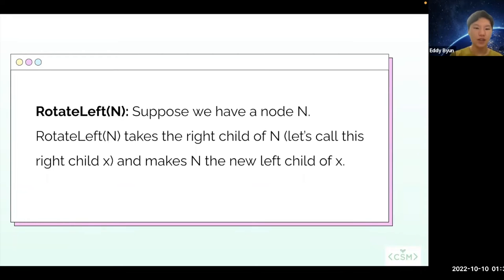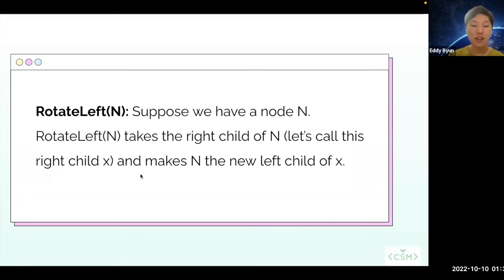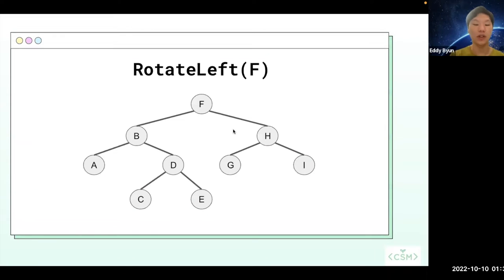Before I get into the LLRB, I do want to talk about a couple of operations. The first operation I want to talk about is the rotate left operation. So suppose we have a node n and we call rotate left on n. What that's going to do is it's going to take the right child of n — let's call this right child x — and it's going to make n the new left child of x. So let's look at this pictorially.